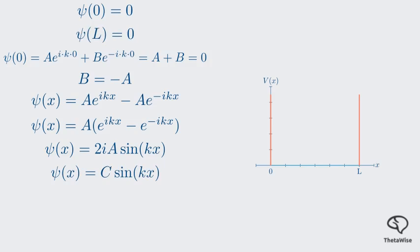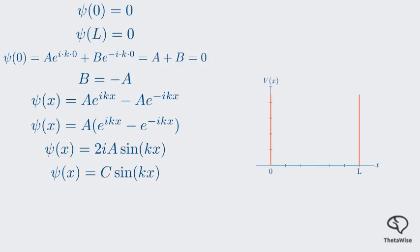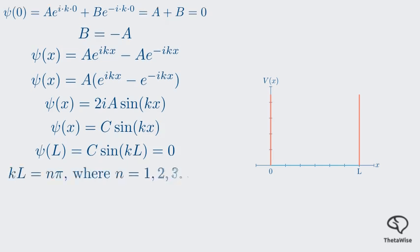Now, for the second boundary condition, ψ of L equals zero. Plugging in x=L, we find that the sine of kL must be zero. For the sine of an angle to be zero, the angle must be an integer multiple of π. This gives us our quantization condition. kL must equal nπ, where n is a positive integer. We'll soon see what this means for the particle's energy.